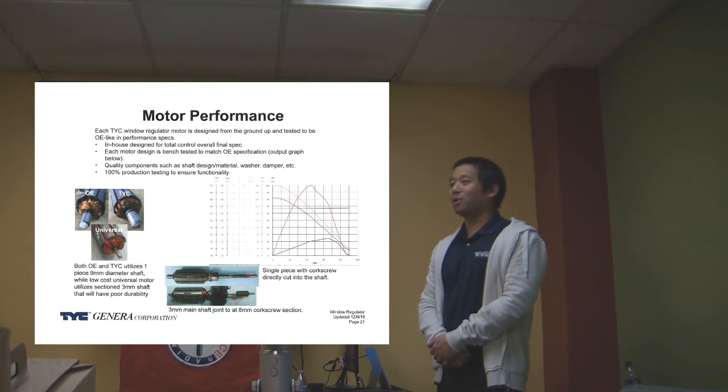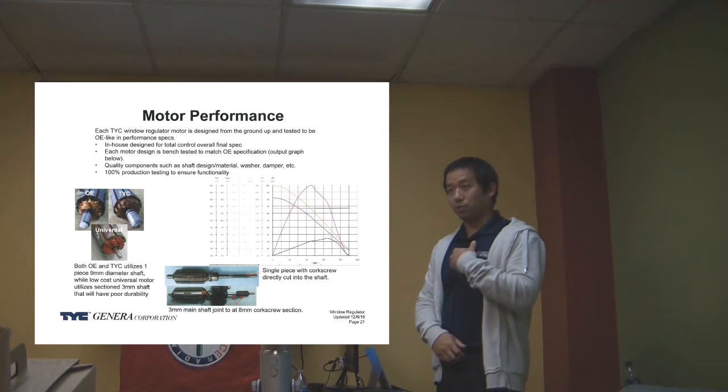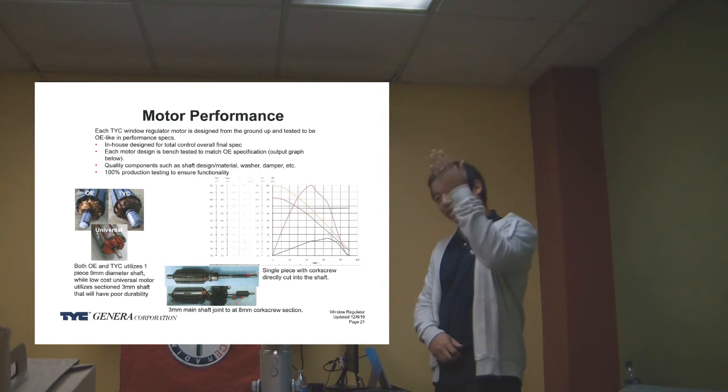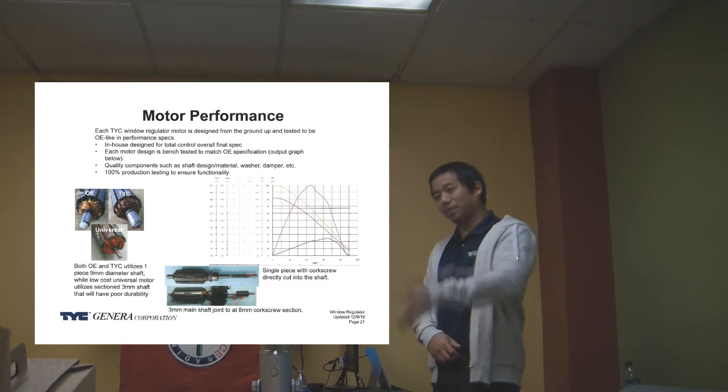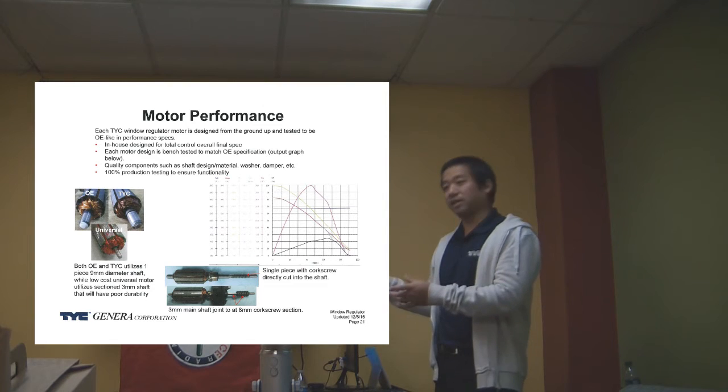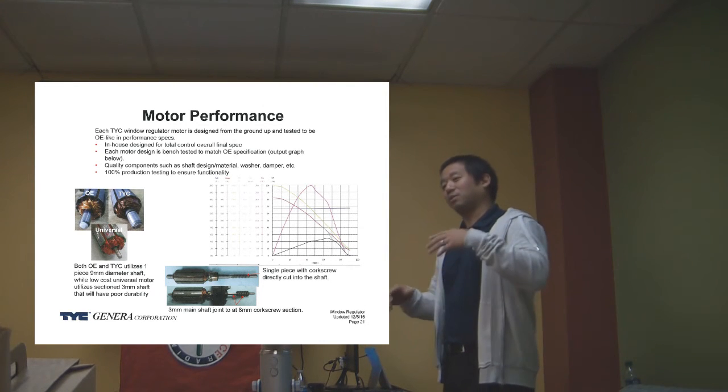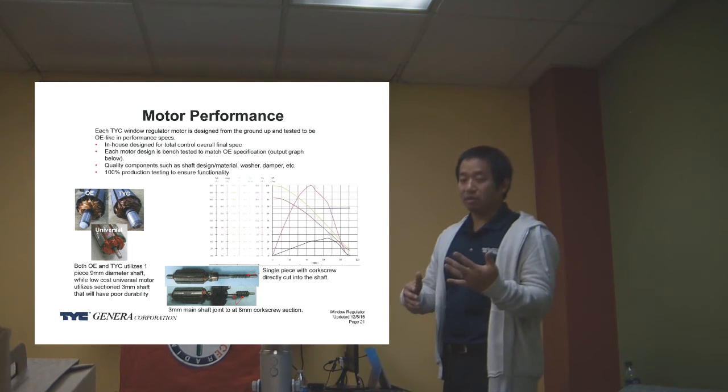So when we go make it, we have to put it through testing as well. We do a 20,000 cycle test. It's just up, down, rest a little bit, up, down, 20,000 times. So sometimes when we use the OE spec, we try it and it's not going to last that long. So we have to change a little bit.